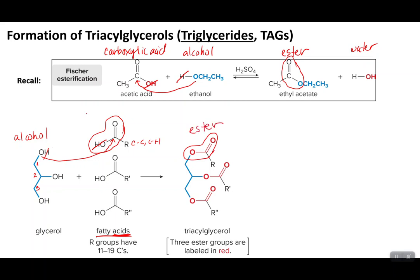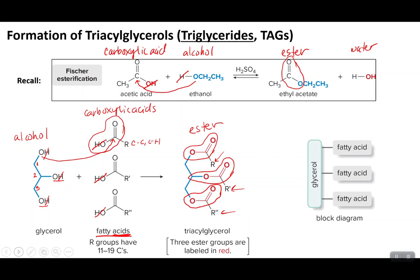Your fatty acids are going to be your carboxylic acids. Because your glycerol molecule has three hydroxyl groups, each one of these OH groups can react with a carboxylic acid. That's why you can have three fatty acids reacting with your glycerol, giving you three ester groups, each with their own R group. It's useful to visualize triglycerides in a block diagram where glycerol is the backbone and the three fatty acid R groups extend from it.